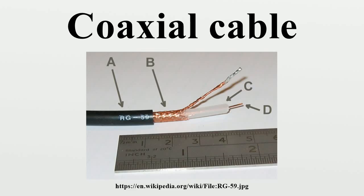Twin-lead transmission lines have the property that the electromagnetic wave propagating down the line extends into the space surrounding the parallel wires. These lines have low loss, but also have undesirable characteristics. They cannot be bent, tightly twisted, or otherwise shaped without changing their characteristic impedance, causing reflection of the signal back toward the source. They also cannot be buried or run along or attached to anything conductive, as the extended fields will induce currents in nearby conductors causing unwanted radiation and detuning of the line. Coaxial lines largely solve this problem by confining virtually all of the electromagnetic wave to the area inside the cable.